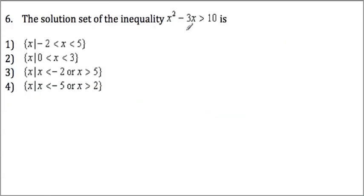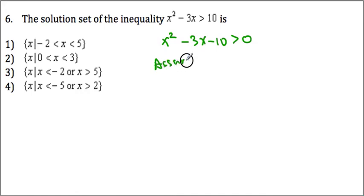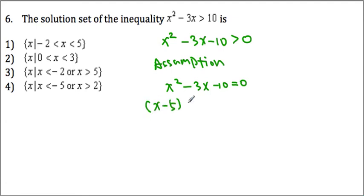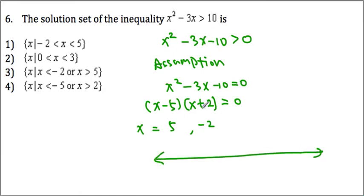Let's look at number 6. We can bring 10 over to the other side, giving x squared minus 3x minus 10 greater than 0. Assuming x squared minus 3x minus 10 equals 0, we get x minus 5 times x plus 2 equals 0, so x equals 5 or negative 2. Those two work as our boundaries for the inequality.